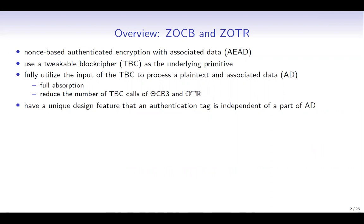This is an overview, and we will present ZOCD and ZOTL. These are nonce-based authenticated encryption with associated data, and they use a tweakable block cipher as the underlying primitive. They fully utilize the input of the TBC to process plaintext and associated data. This property is often called full absorption, and they reduce the number of primitive calls of ThetaCB3 and OTR.